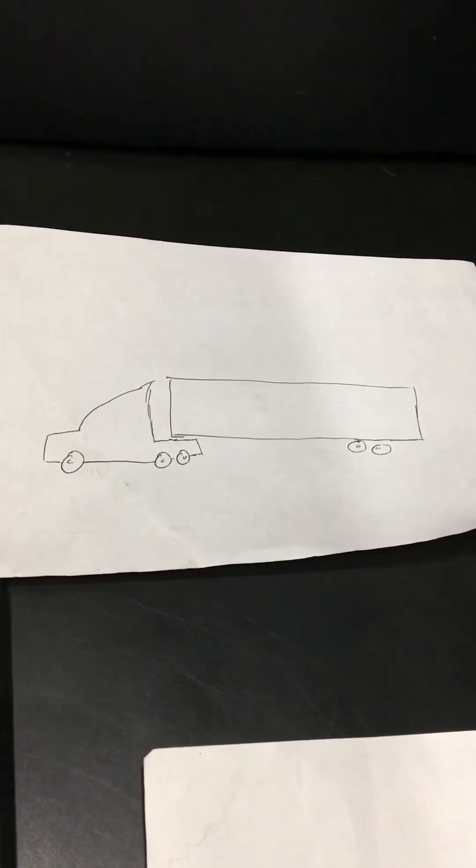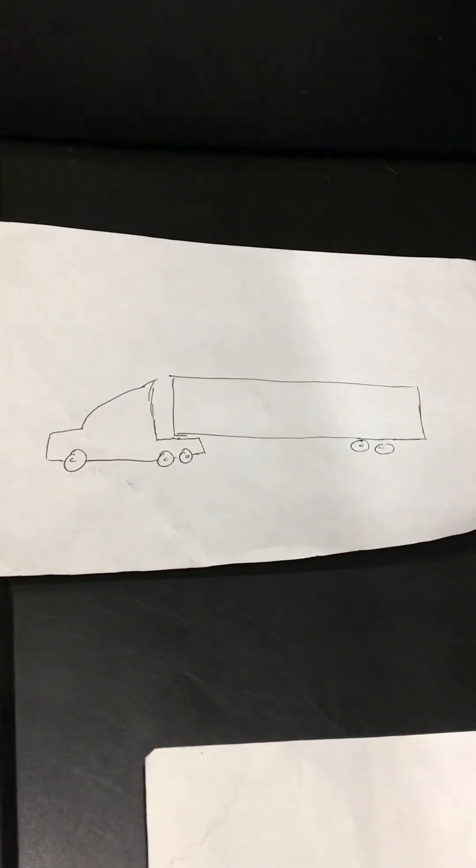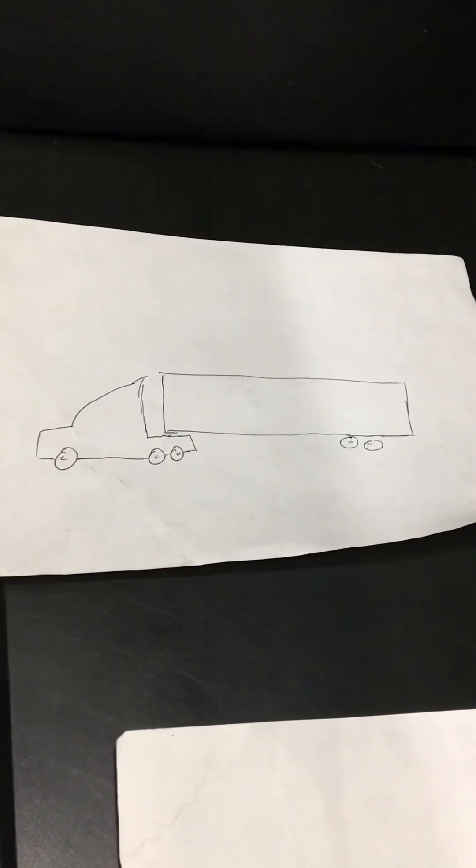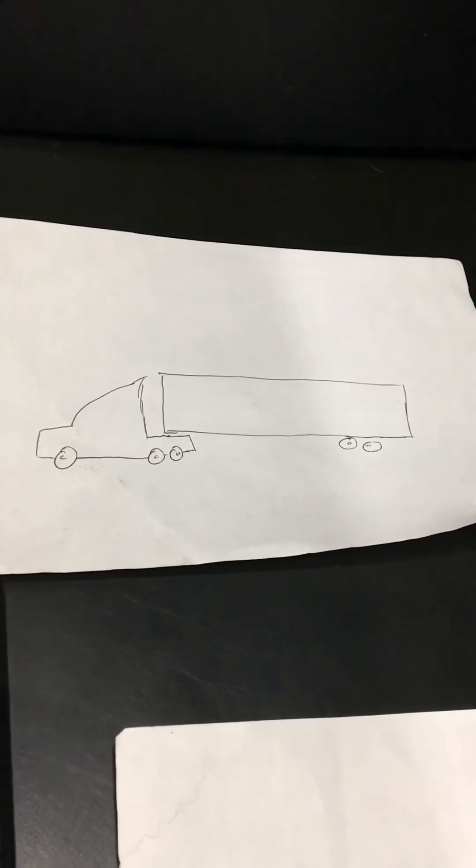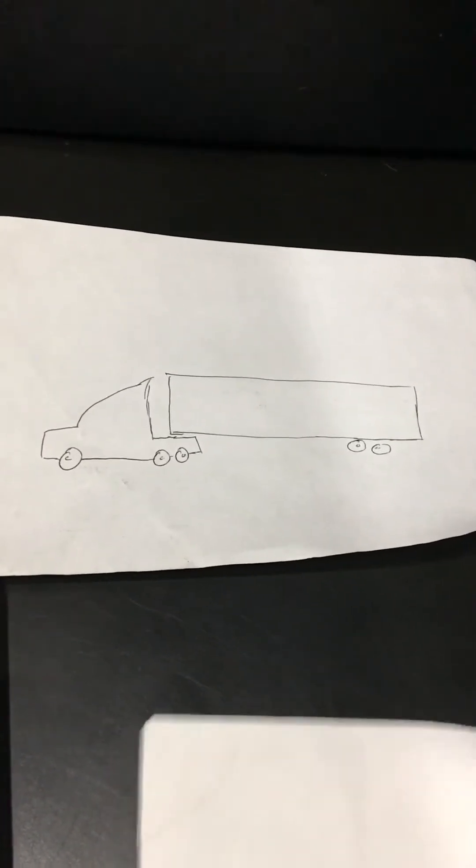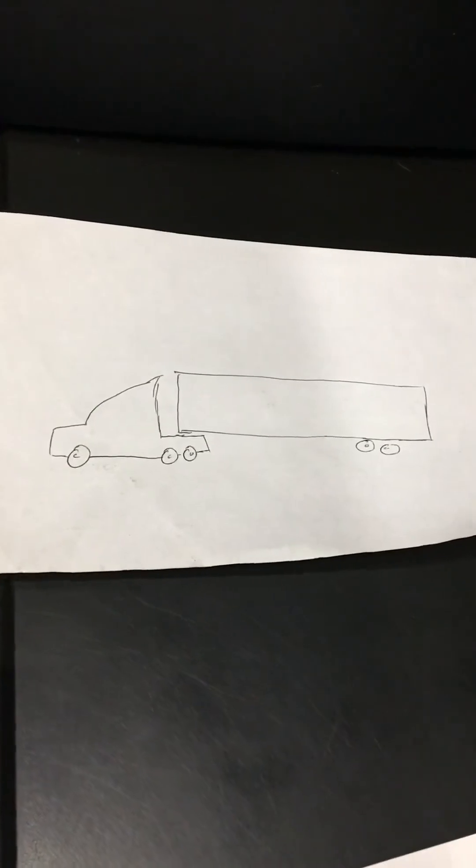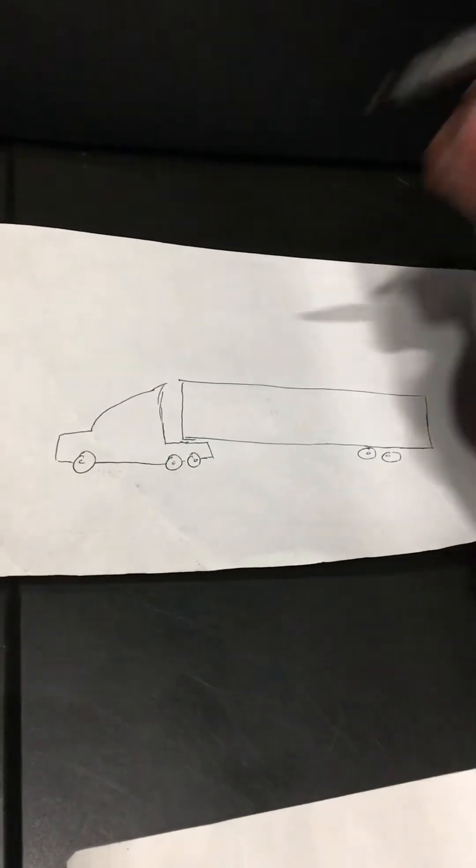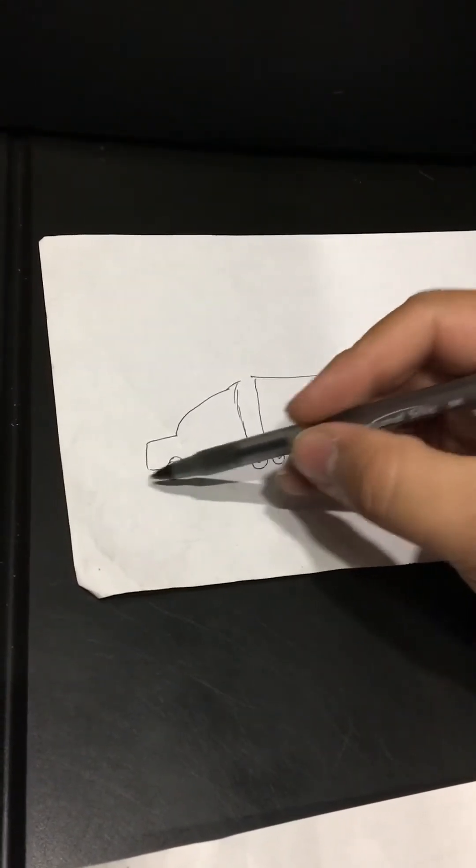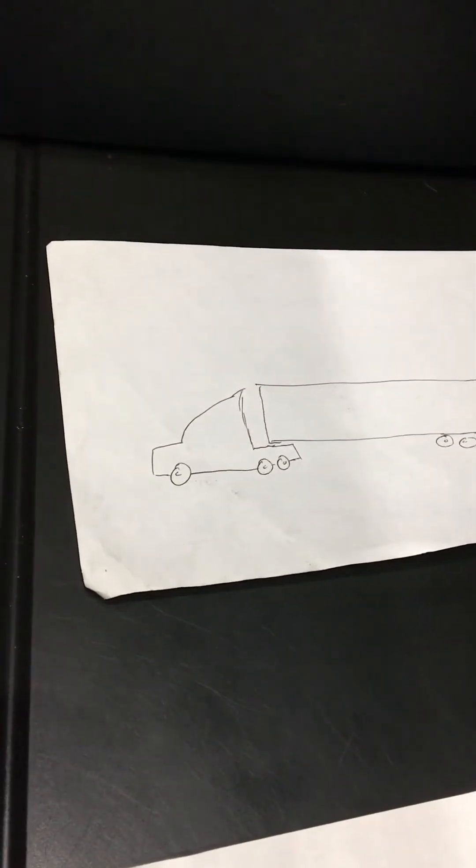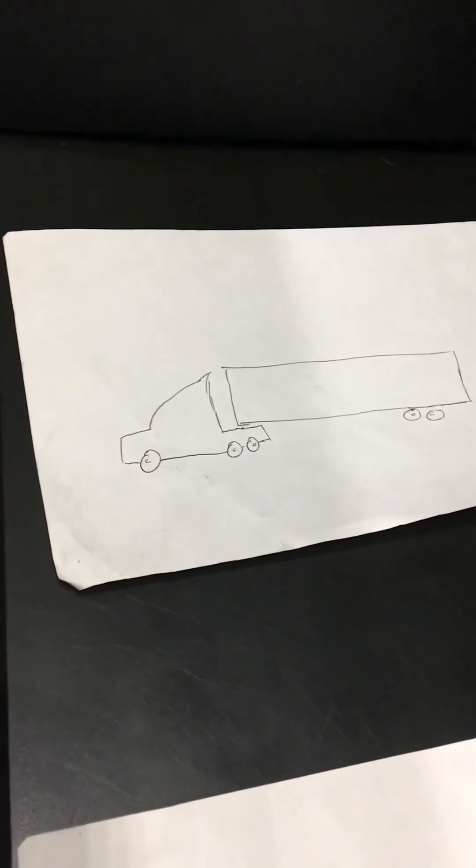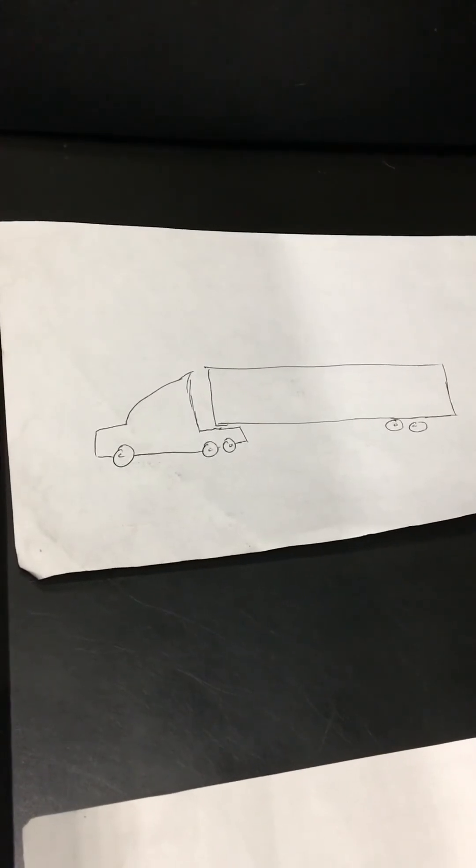So you're driving onto the scale. Once again, the scale only gives you one weight, it does not split it up by axles. You're driving onto the scale. First thing you want to do is just put your steers over the scale. For this example, I'm going to use what this load that I'm on currently weighs.